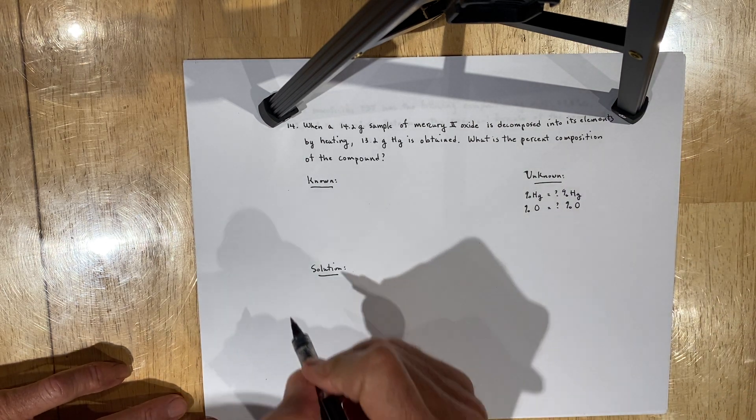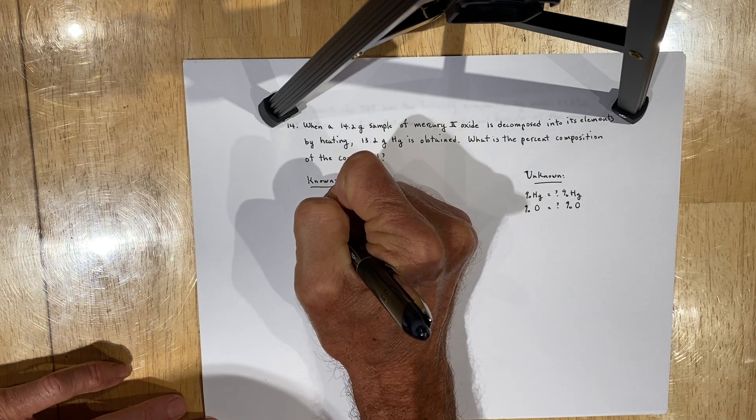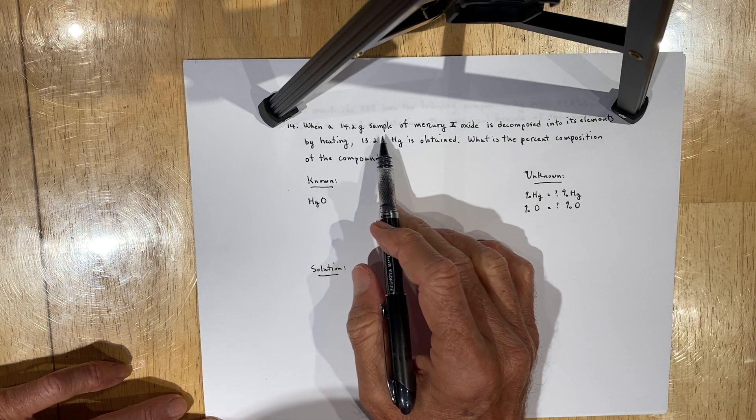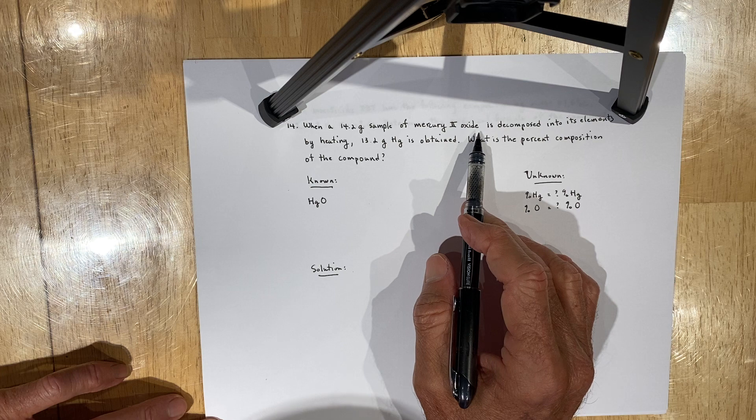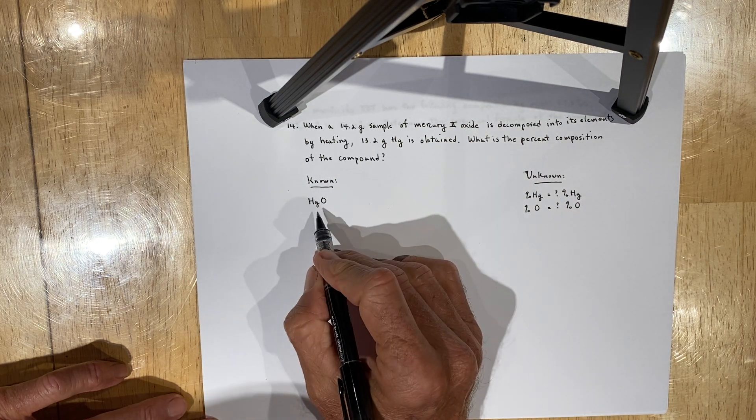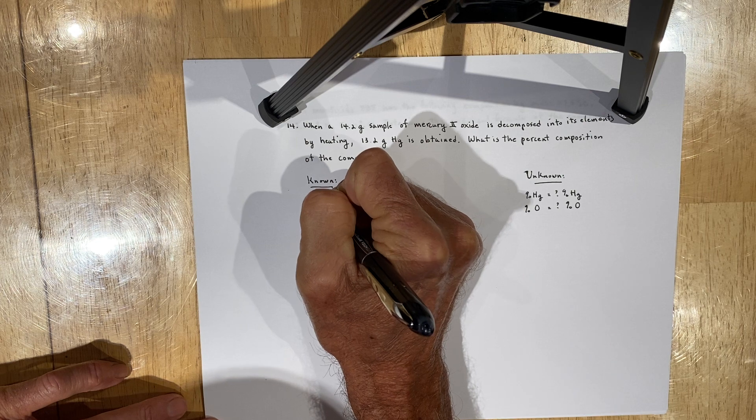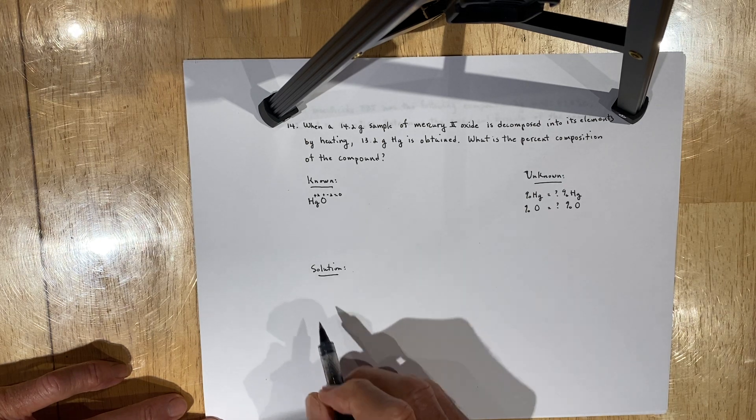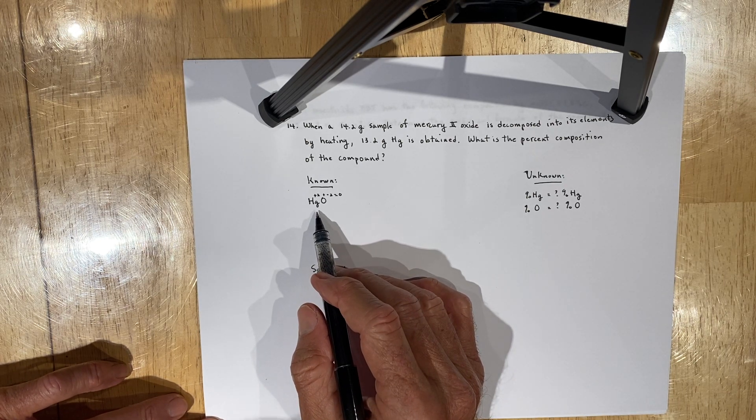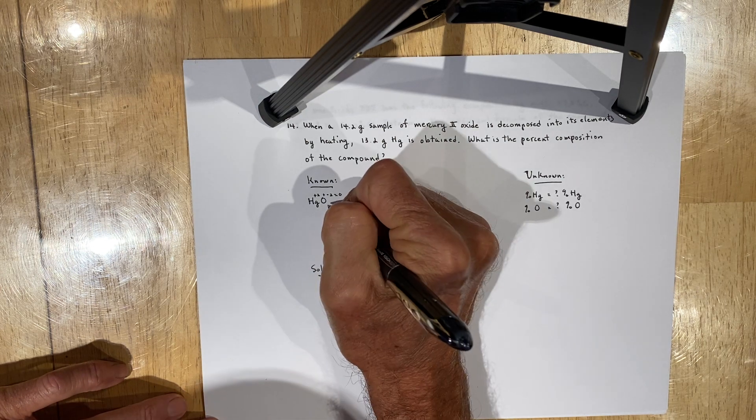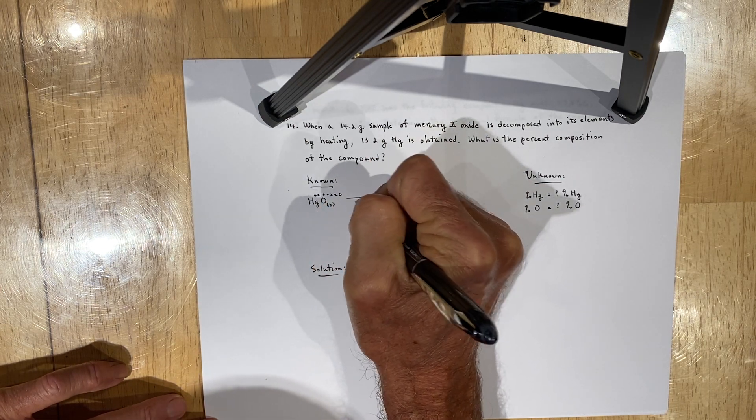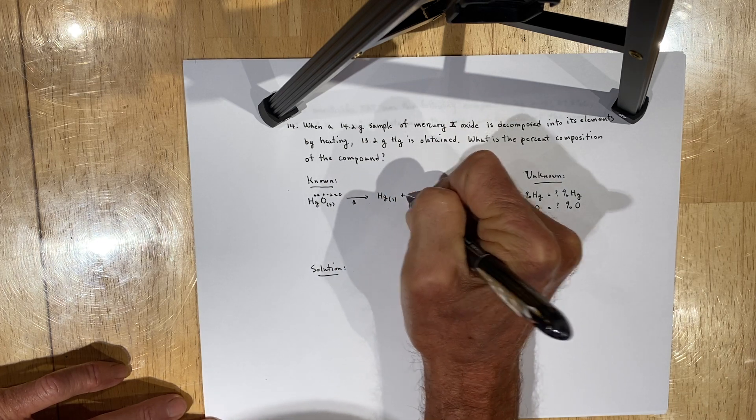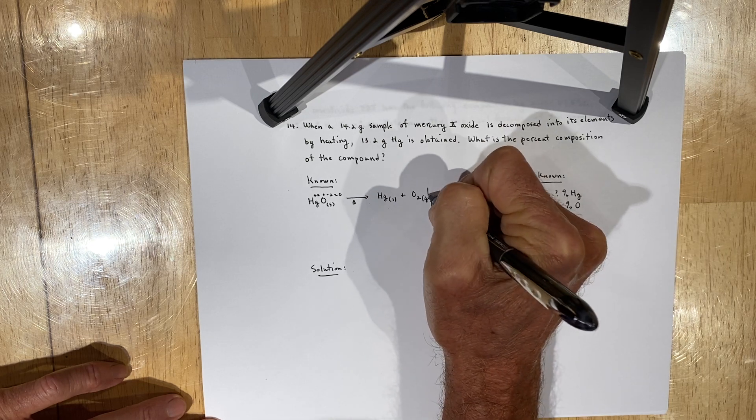That being said, the initial information you're given is that mercury oxide, the compound, the 14.2 gram sample of mercury 2 oxide, is decomposed. Meaning that this is mercury 2 oxide, so mercury plus 2, oxygen is minus 2, sums to 0. So therefore, first of all, you need to make certain that you write the correct formula for mercury 2 oxide, which is going to be a solid substance. That when heated, decomposes to mercury, which is a liquid, plus oxygen gas, which is released.